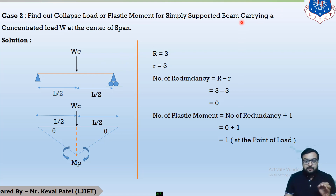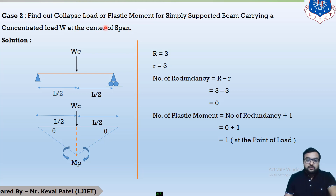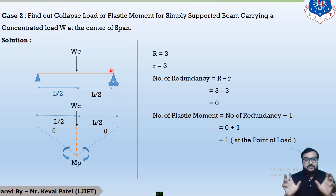This simply supported beam carries a concentrated load of value W, denoted by WC because if the load exceeds this limit the beam fails. You have to consider this concentrated load as the maximum load. This concentrated load is acting at the center, and since the total length of the beam is L, both distances from the center are equal: L/2 on the left and L/2 on the right.